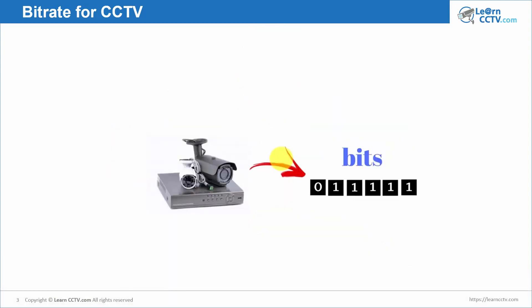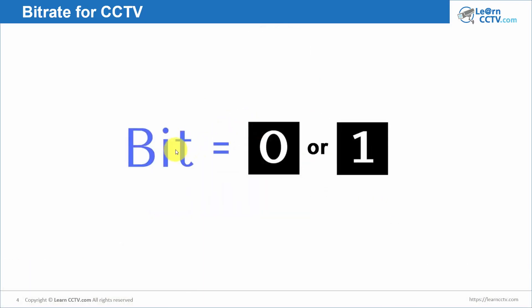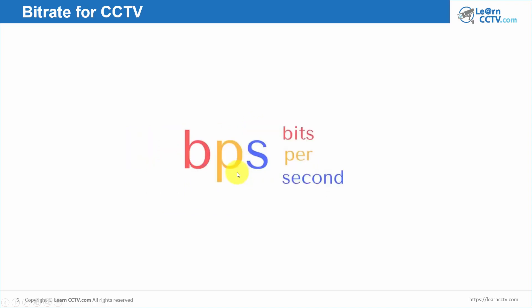We are talking here about bits — what is leaving your DVR, your IP camera, NVR, doesn't matter — are bits. Bits are zeros and ones, a sequence of zeros and ones. In the end of the day, your image is converted to bits, and those bits go through the network. You can also use bits per second to measure the speed of your bits moving in the network — how many bits per second you have.